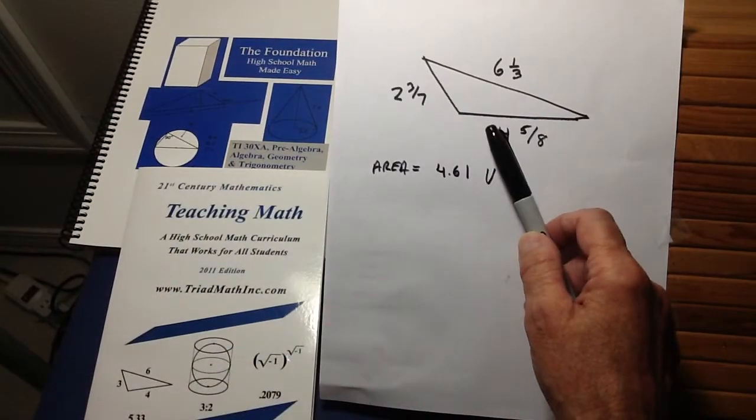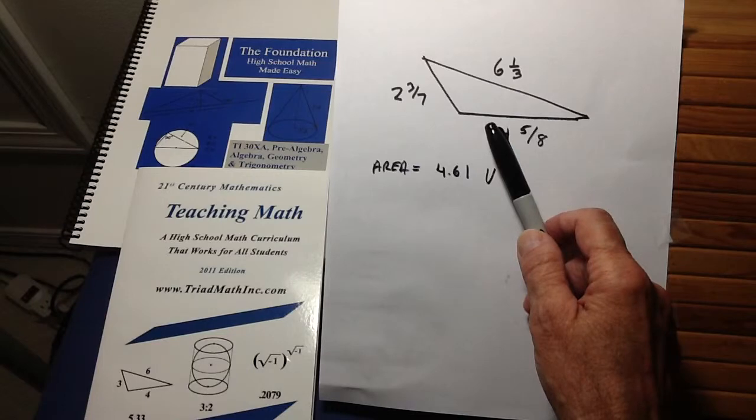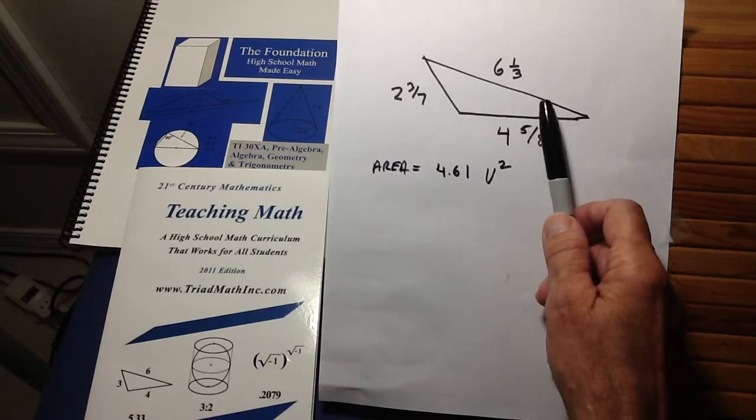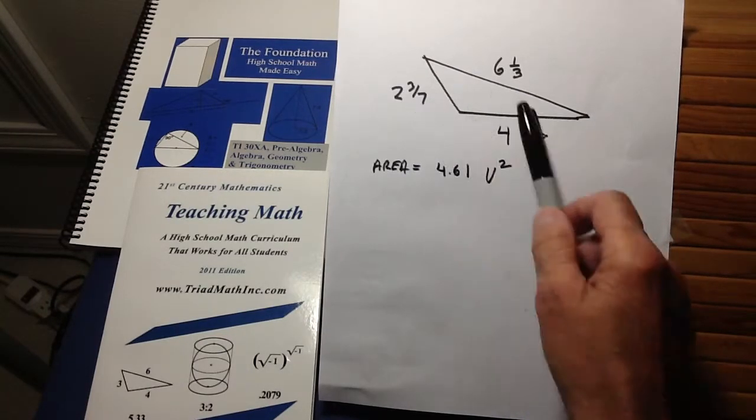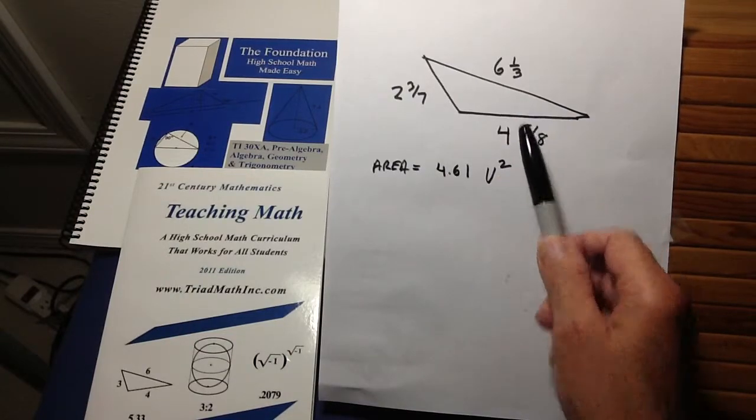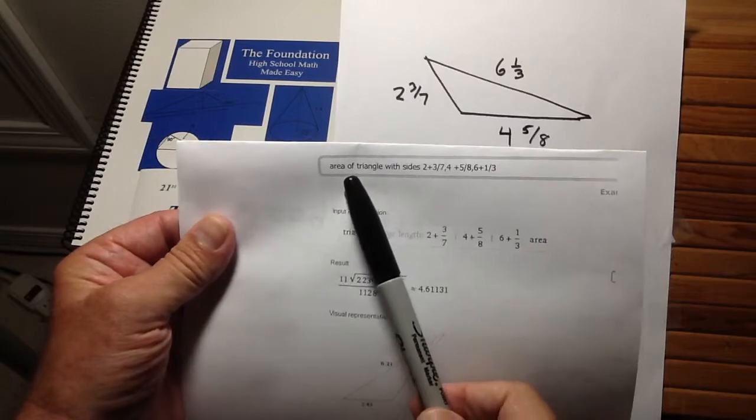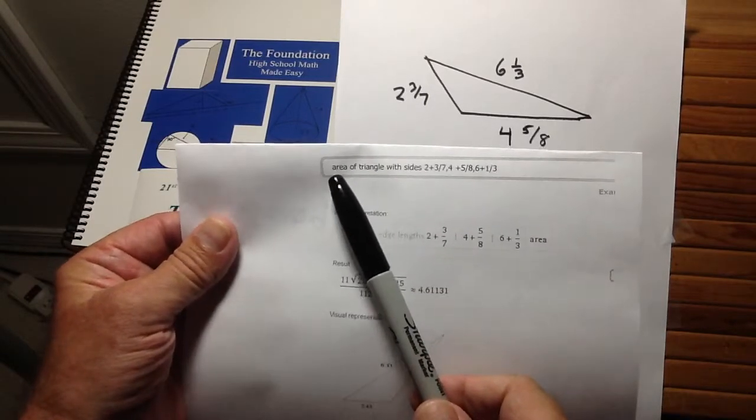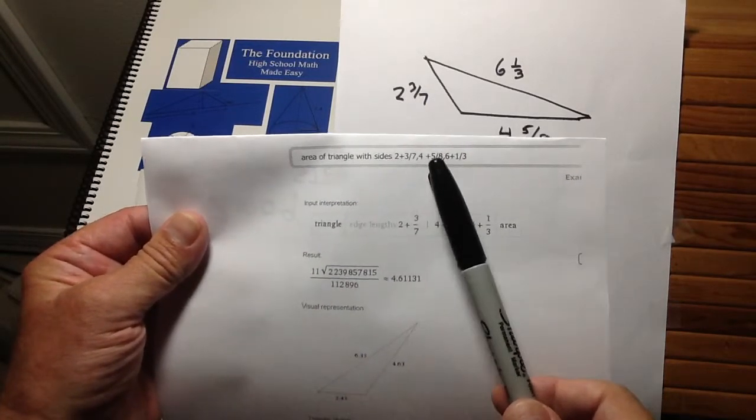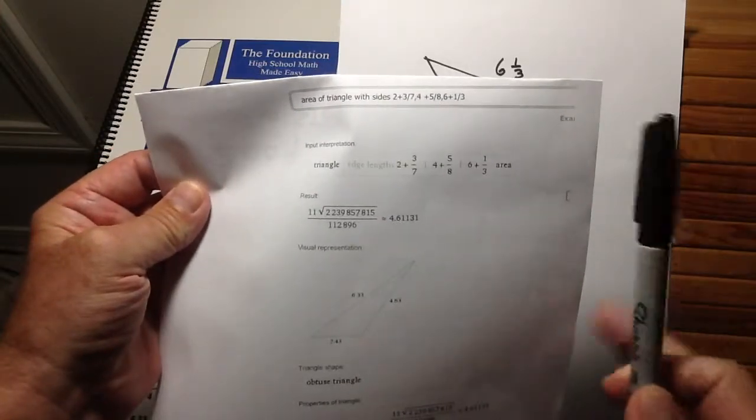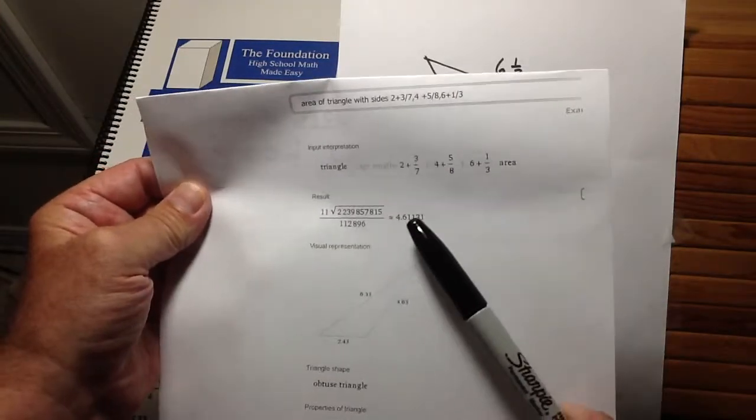And of course, I always have them check the work by taking a different angle and using these sides and doing it. And you, of course, get the same answer. Of course, today we can use a more modern tool to do this. We can just go to Wolfram Alpha and put in area of a triangle, put in the three sides, and it will calculate the area. And of course, it's the same answer we got, 4.61.